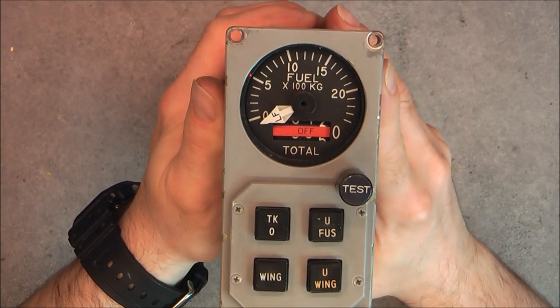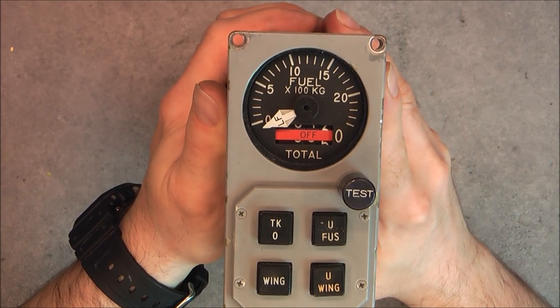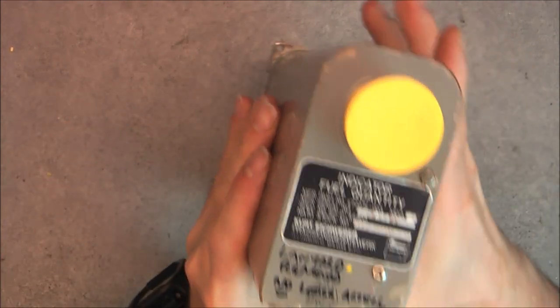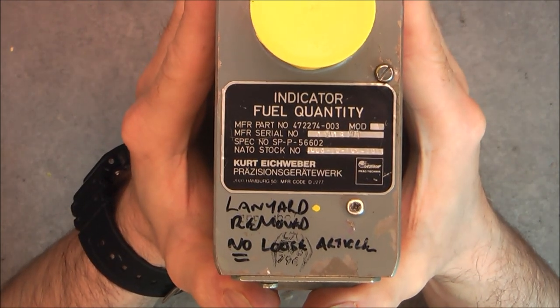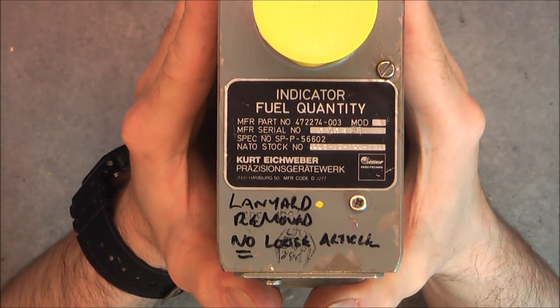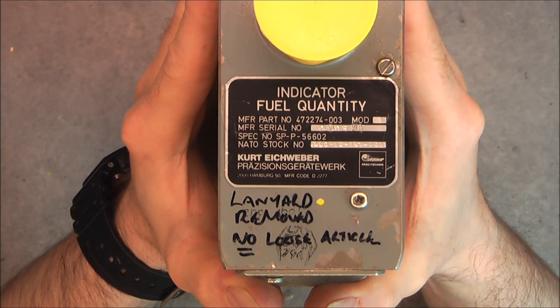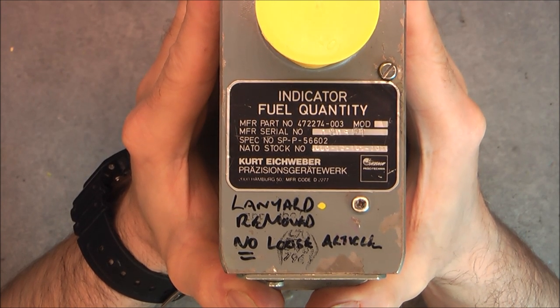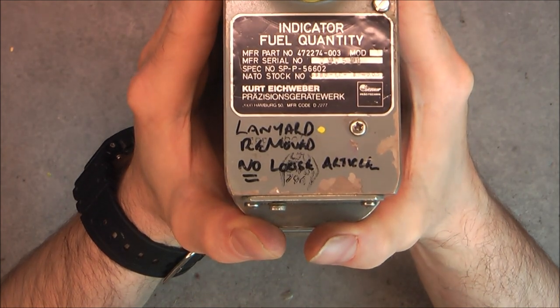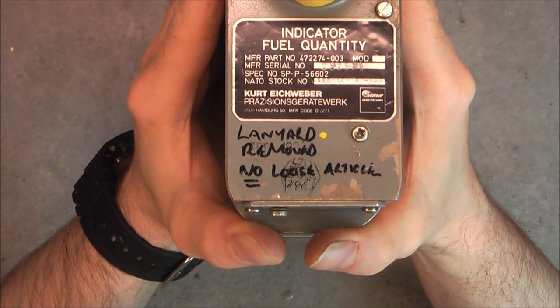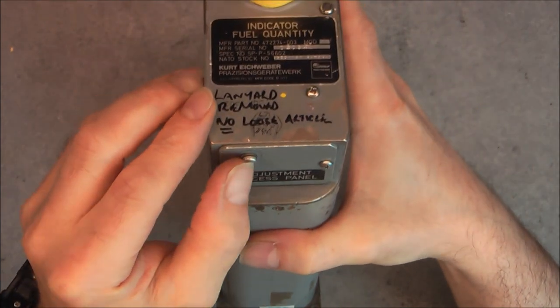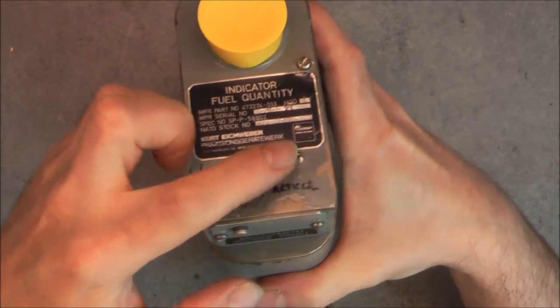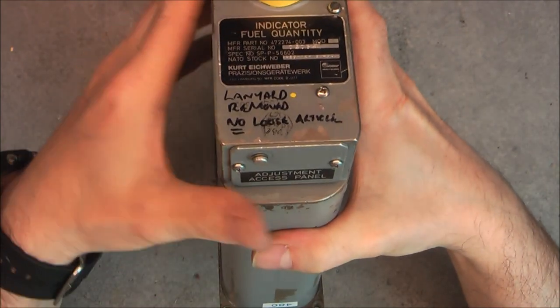Here, the combined fuel indicator. It is called exactly the indicator fuel quantity, made by Kurt H. Weber, precision gear at work, obviously in Germany. We have here an information, lanyard removed, no loose article. I believe they talk about a lanyard to this panel, between here and here, maybe to not lose the panel.